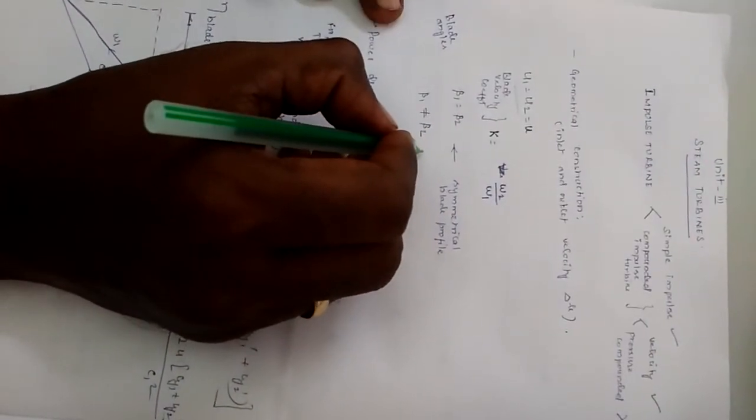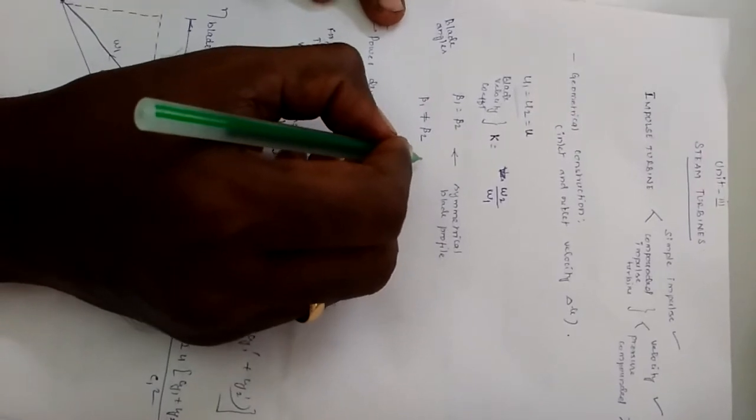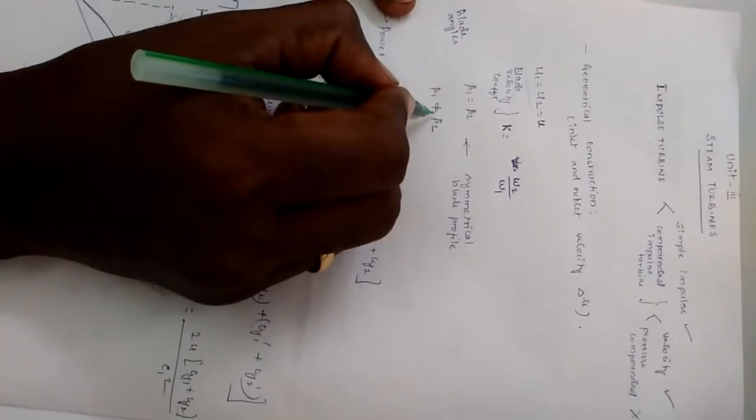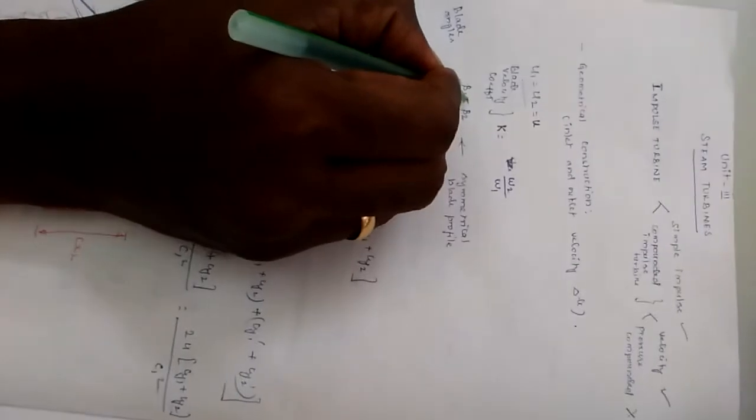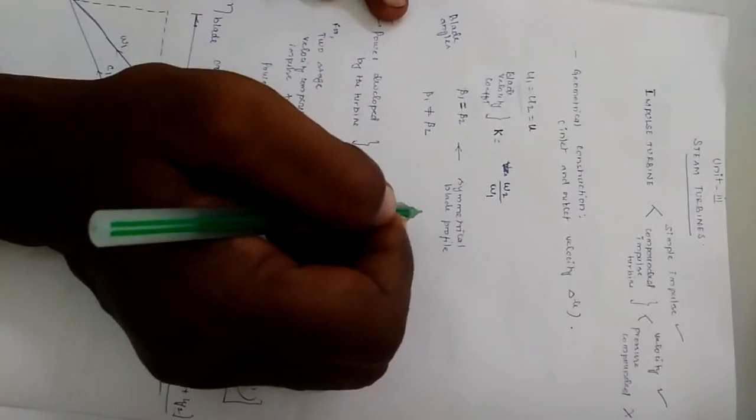Instead, if they specify different blade angles in the problem itself, like blade angle at inlet is some value and blade angle at the outlet is some other value, then your beta 1 and beta 2 are not equal. But generally these two will be equal. If nothing is specified in the problem, then you can consider that beta 1 equal to beta 2, which indicates blade is of symmetrical profile.